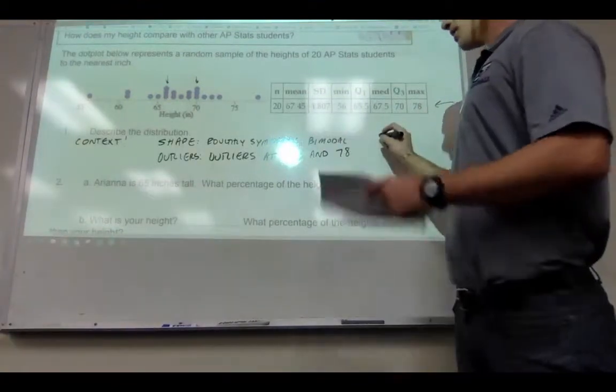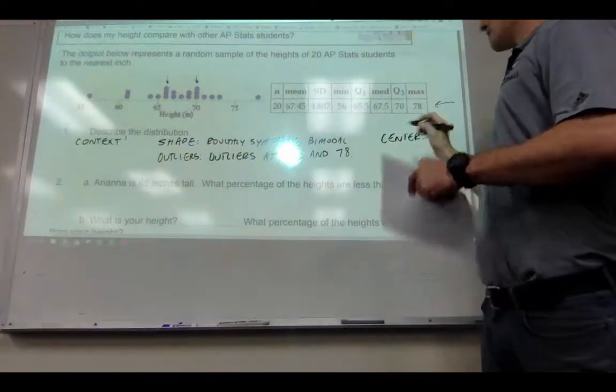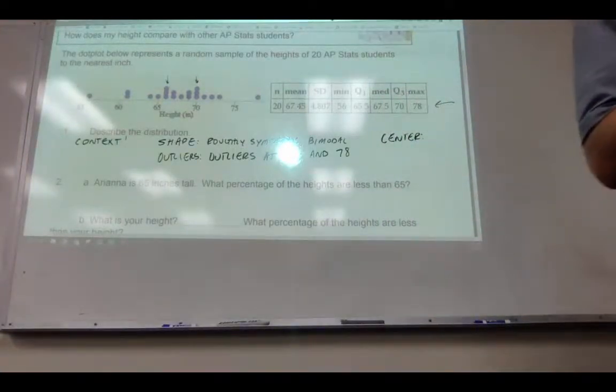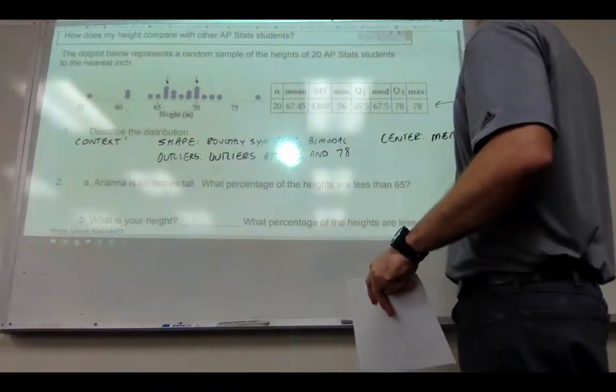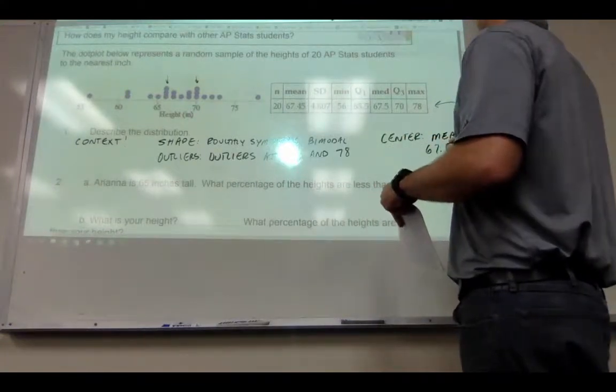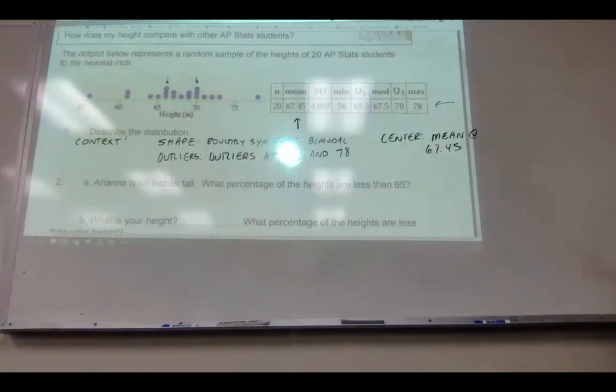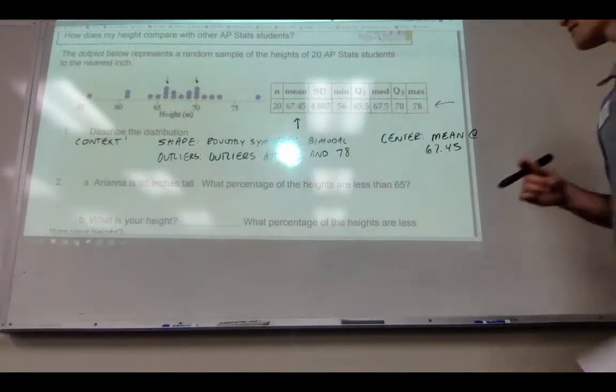So SOCV. So our center, we have our mean. We also have our median. So you should say it's something like the mean is at 67.45. This is from the chart. So how would you know that otherwise? You would. But now you know.